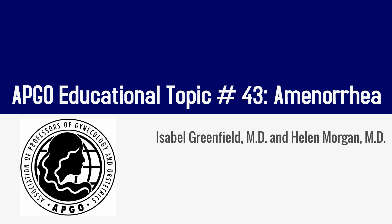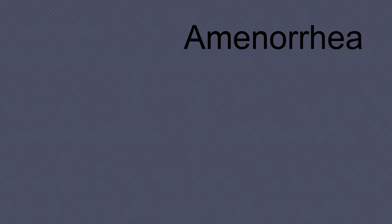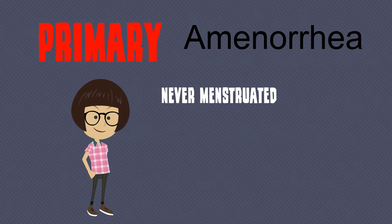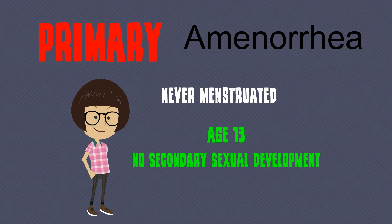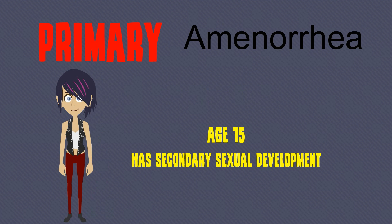APCO educational topic number 43: amenorrhea. Amenorrhea is the absence of menstruation and can be classified as primary or secondary. A young woman with primary amenorrhea has never menstruated. If she has never menstruated by age 13 and has no secondary sexual development, then she is classified as having primary amenorrhea.